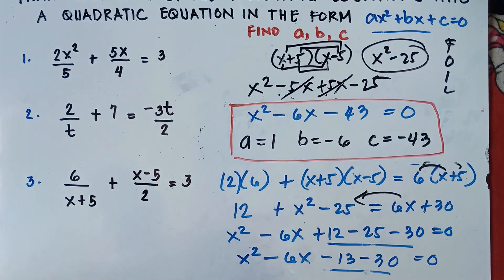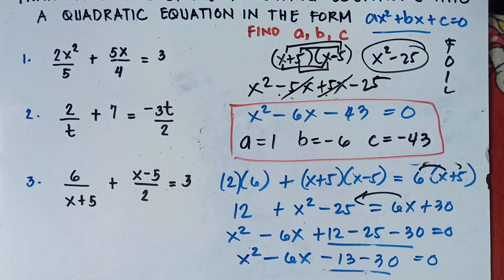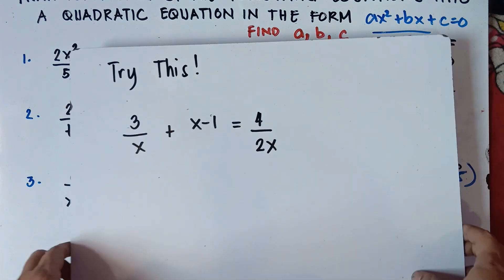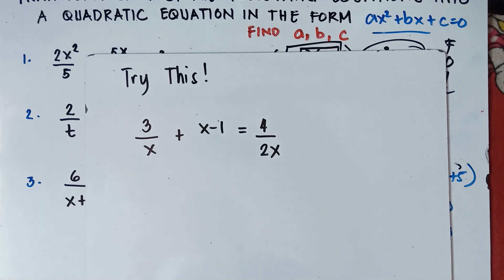For your assignment, try this one: 3 over x plus x minus 1 equals 4 over 2x. Put your answer in the comments section — find the general form and the values of A, B, and C. If you like this video, don't forget to subscribe and share it with your friends and classmates so we can help them. Once again, this is Teacher MJ. Goodbye for now, bye-bye!